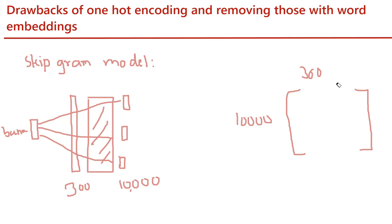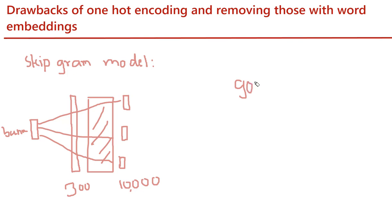These word embeddings have useful features — we can perform mathematical operations like addition and multiplication, and we can also check the similarities between words. For example, if we give the word 'good' and want to identify all words close to it, we get words like 'bad', 'excellent', and similar words that are very close to 'good' according to the Google News corpus. Let's see how to load that word2vec model for identifying vectors for each word trained on the large Google News corpus in Google Colab.